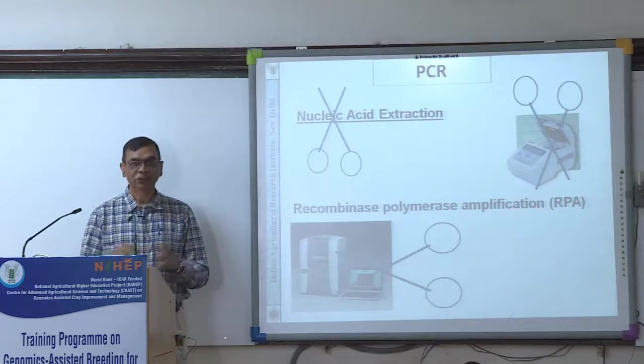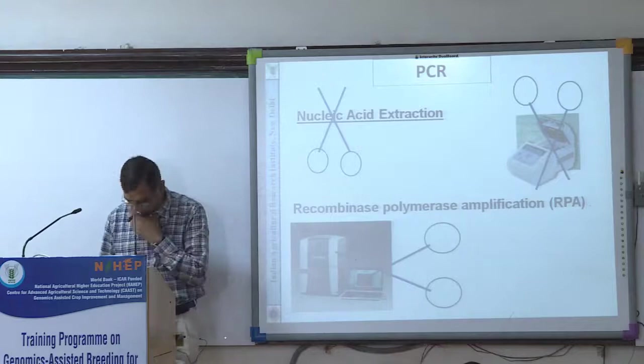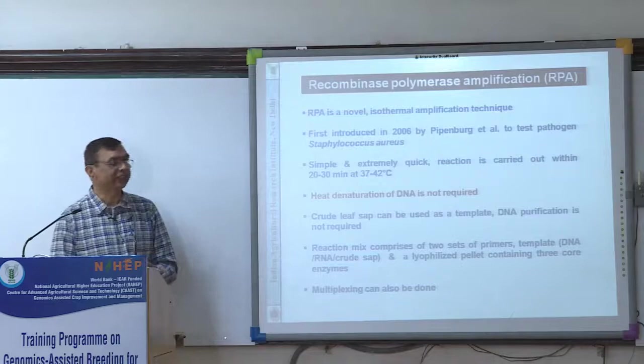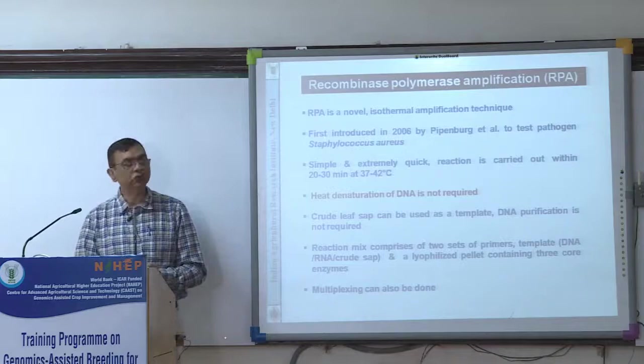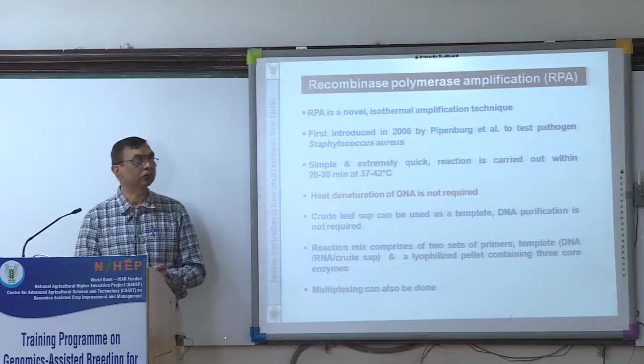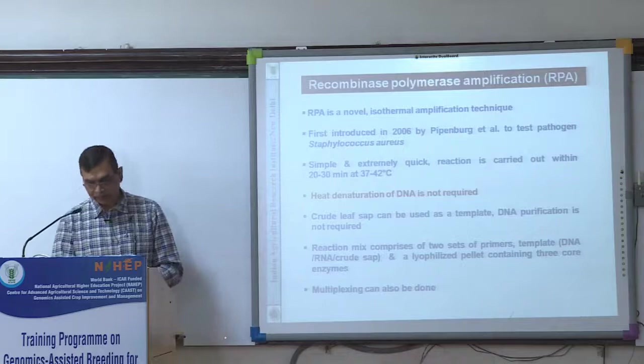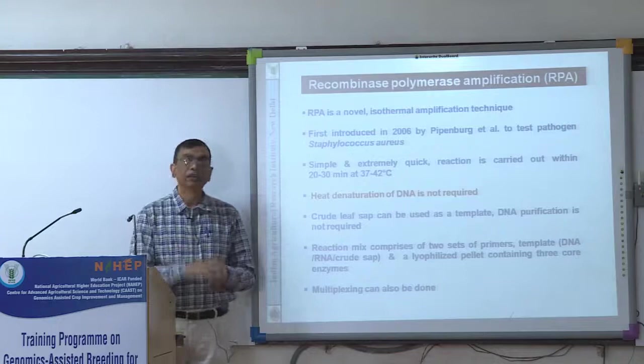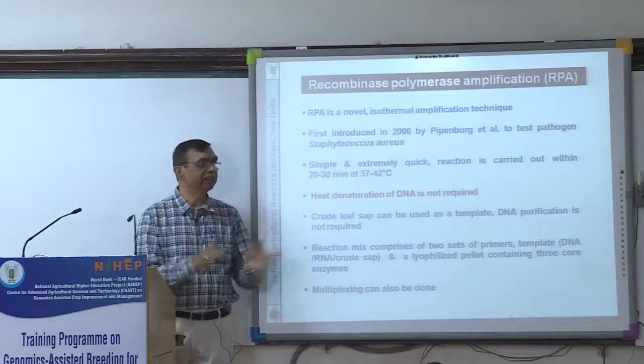Can you imagine PCR amplification without DNA template preparation and without a thermal cycler? It is possible — isothermal amplification. Isothermal means at the same temperature all the steps of denaturation, annealing, and extension are happening. Recombinase polymerase amplification — RPA — is a novel isothermal amplification first introduced in 2006 to test Staphylococcus aureus. It is highly simple and extremely quick: reaction is carried out within 20 to 30 minutes at 37 to 42°C. Even at room temperature, PCR amplification is done. No DNA template isolation is required; crude sap can be used. The reaction mixture comprises two sets of primers and a lyophilized enzyme mixture — recombinase polymerase enzyme.